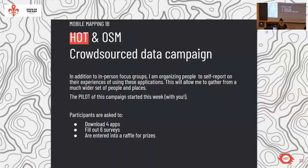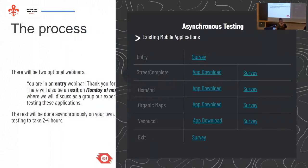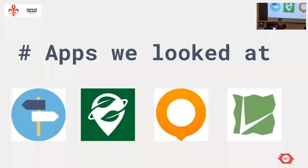I also did a crowdsourced campaign with HOT. I created some ODK surveys, had people download these apps and try them out — it was four or five hours for a focus group. We focused on four main applications: Street Complete, Organic Maps, OSM AND, and Vespucci. We picked these because they are open source and have current maintainers. We also looked at Every Door, but it came out after this research had ended, so it's not included very much.